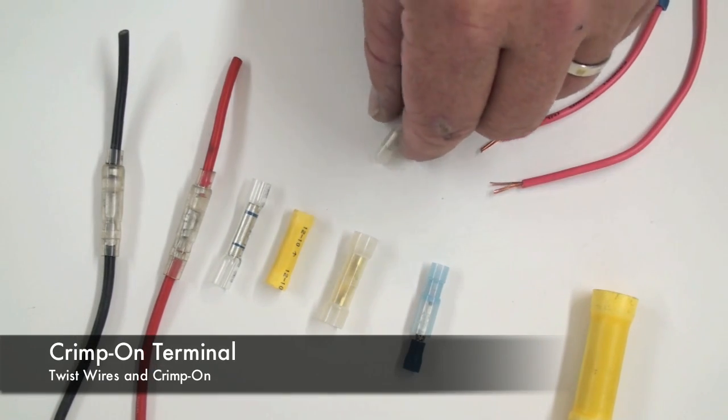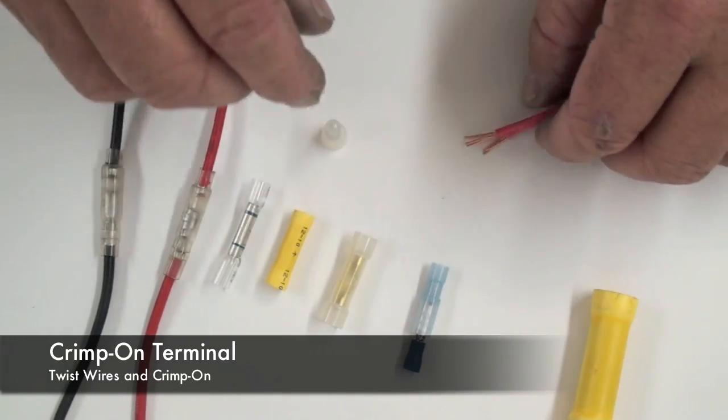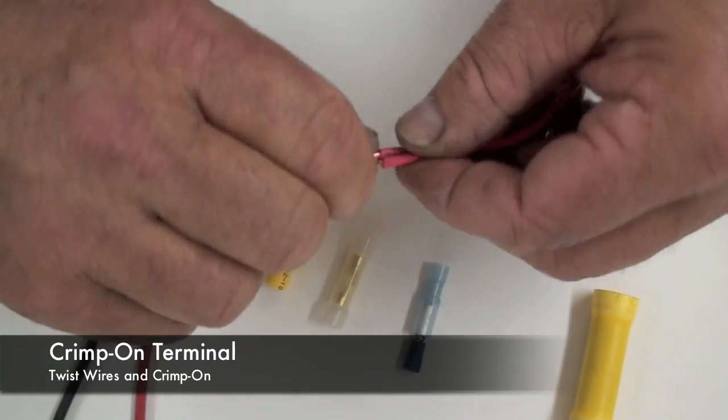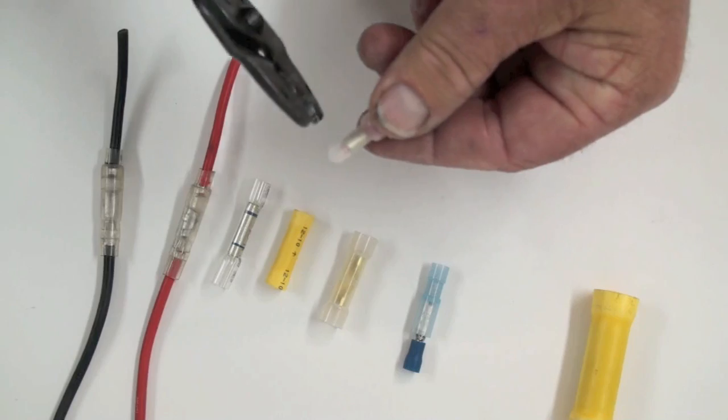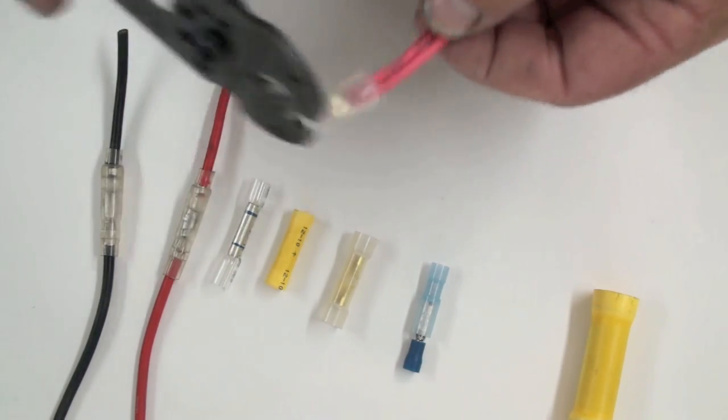This is another type of crimp-on wire connector. It's more of a permanent connection. To use it, you simply strip off some insulation from your wires, twist it and slide it on, and again using the crimping tool, secure it and make sure it doesn't come off.